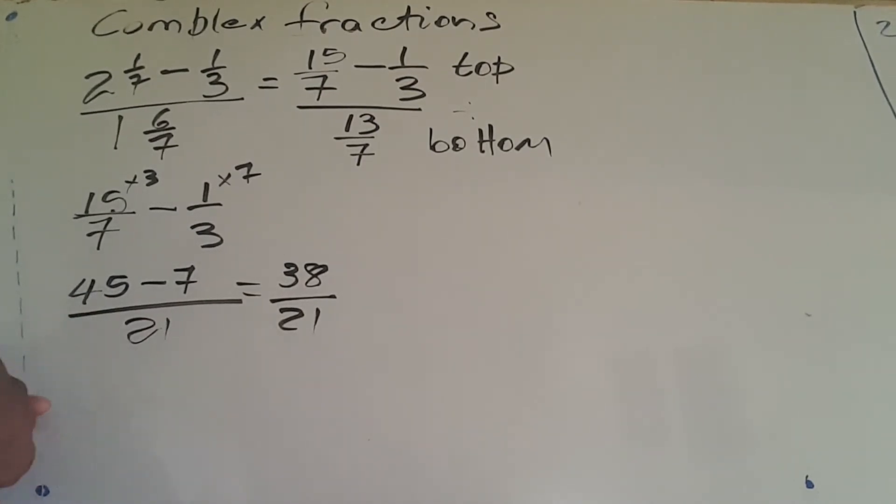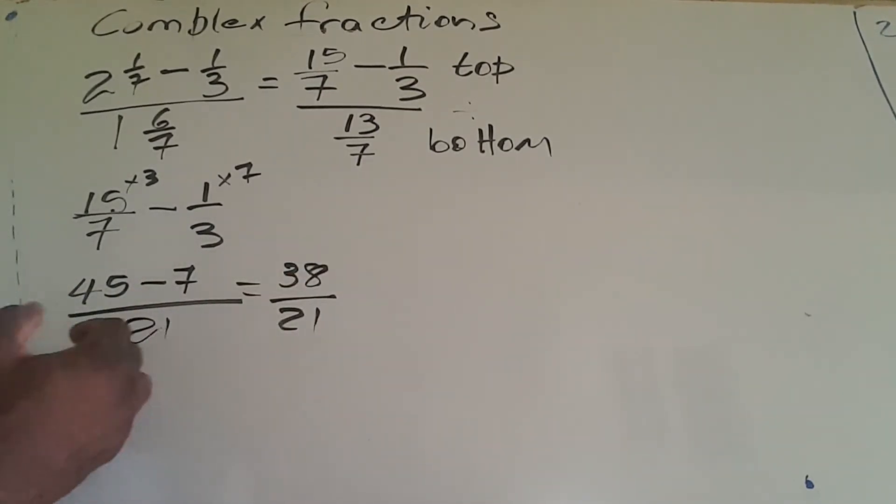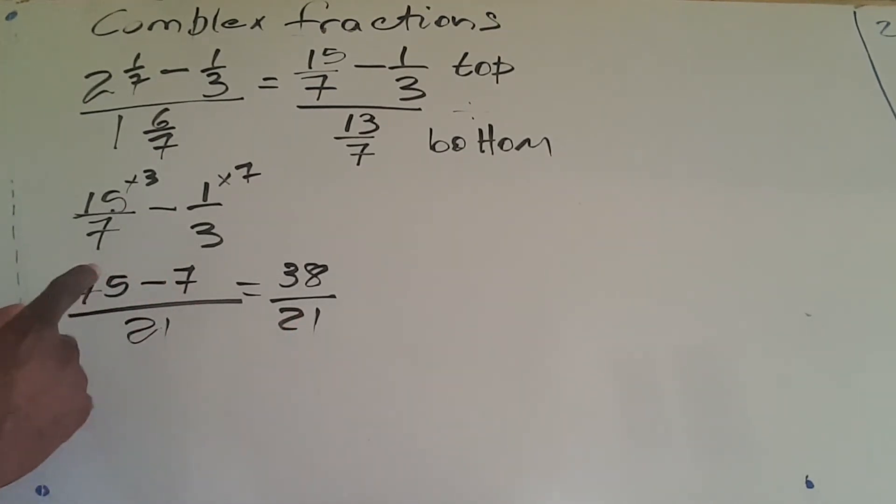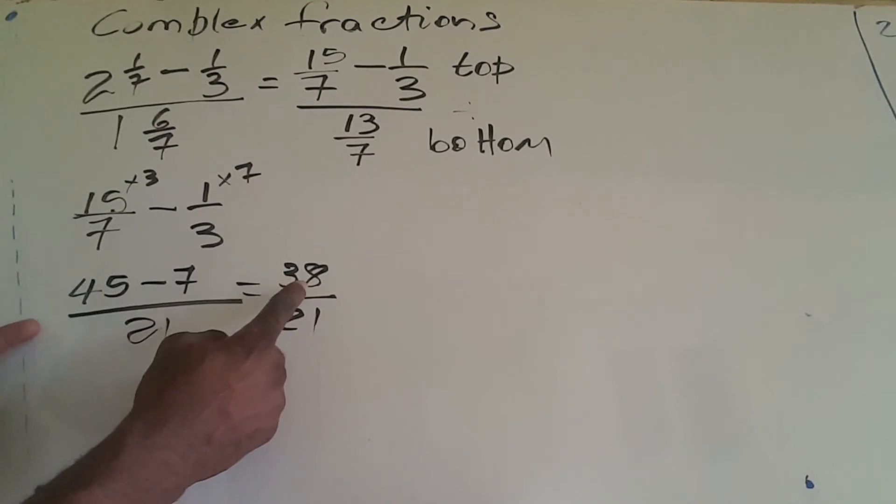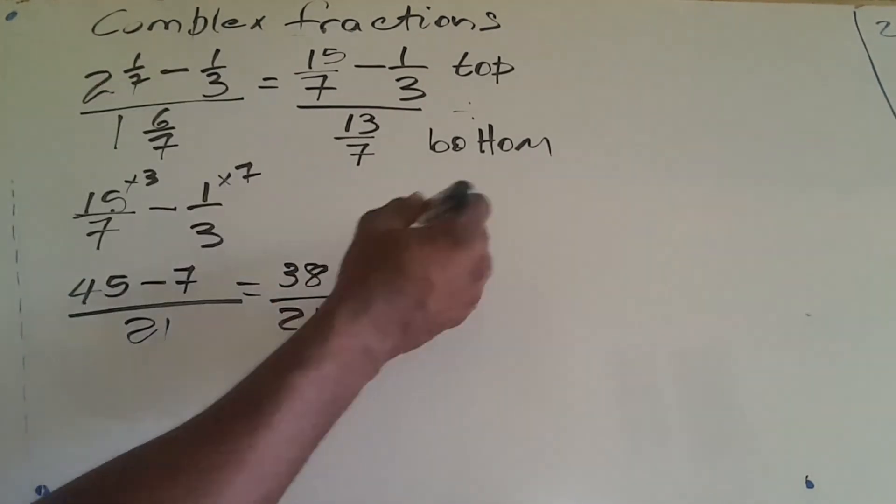Sometimes I'll break this down if I can, but I don't think I have any number to break this down right now, so I'll leave this as is. So we're looking at 38 over 21 for the top, and it must be divided by 13/7.